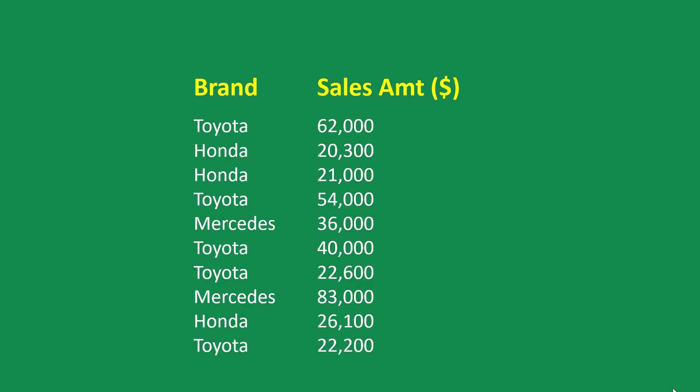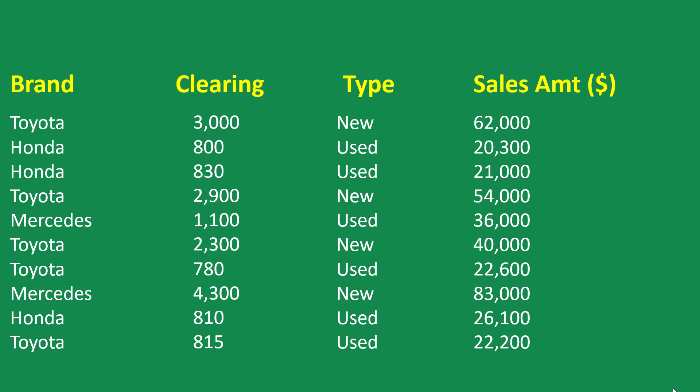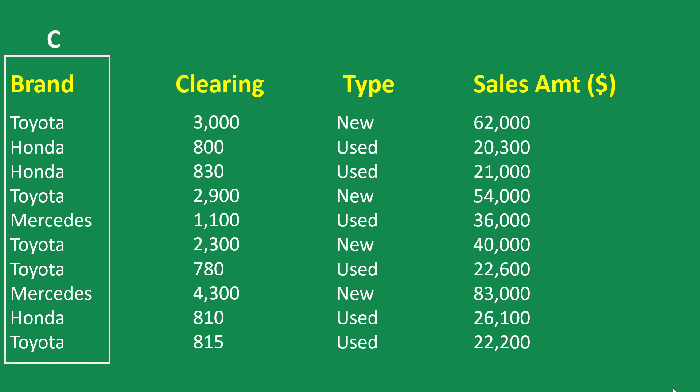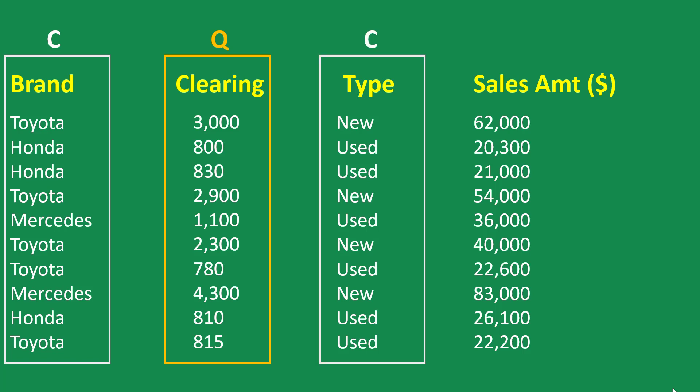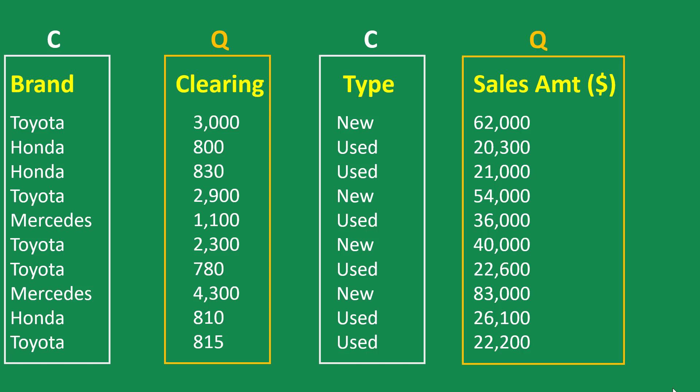So you look at each field and categorize it. For example: brand — categorical, because it doesn't contain measurements. Clearing amount — quantitative, because it contains a unit of measurement, which is money. Type of vehicle, whether new or used — categorical. Sales amount — quantitative. Once you have this kind of categorization, it becomes easy to know how to visualize.